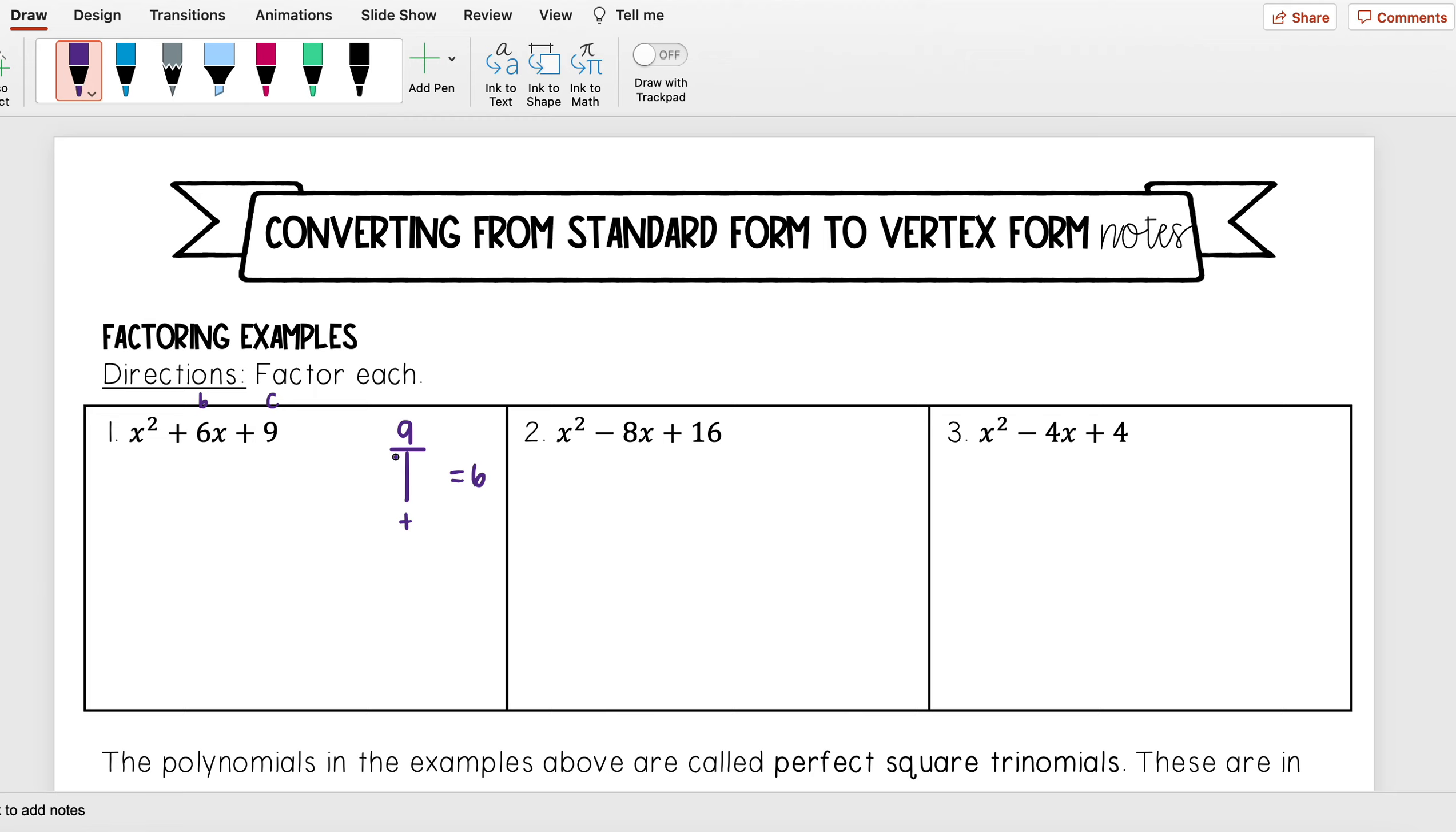Well, 1 times 9 is equal to 9, and 3 times 3. And I see the ones that add up to 6 are going to be 3 and 3.